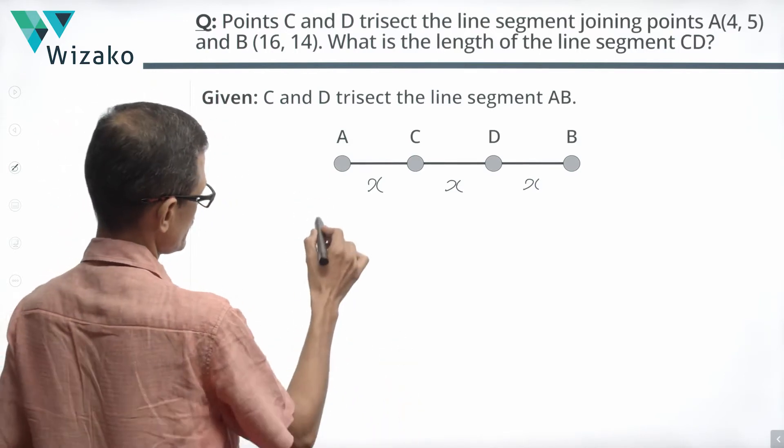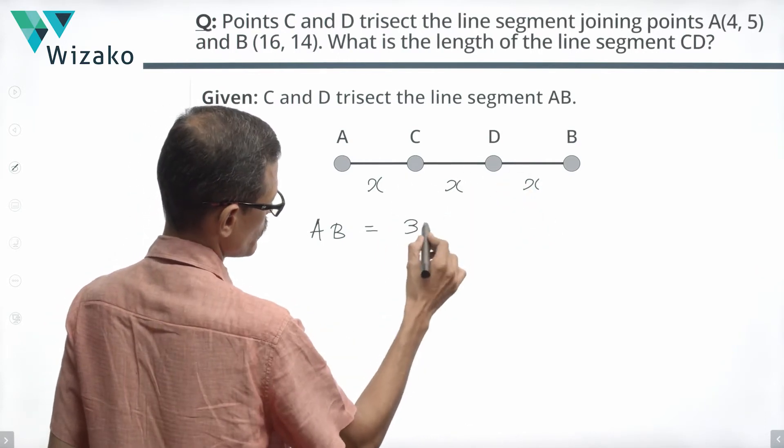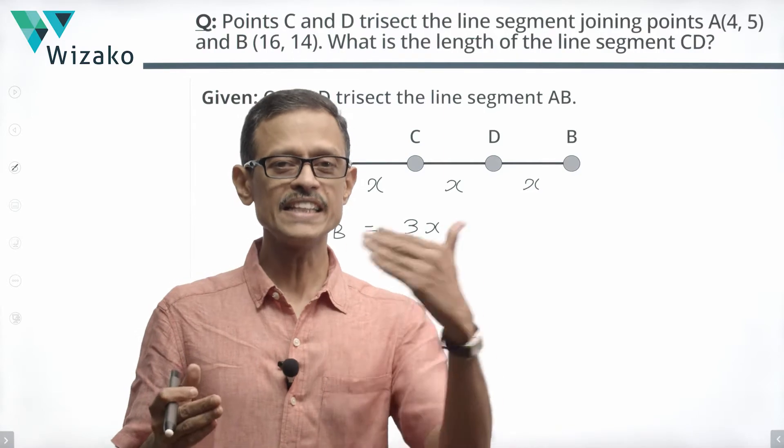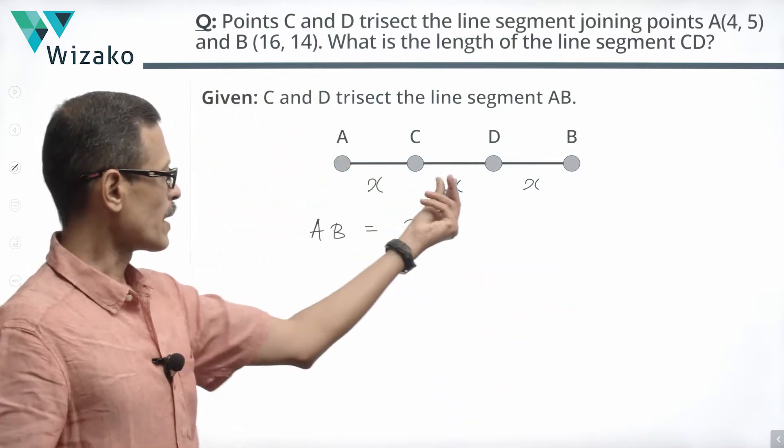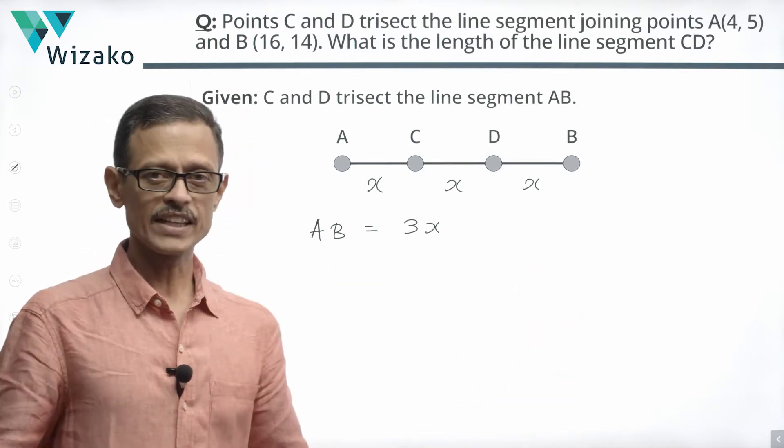This translates to the fact that the measure of line segment AB will be equal to X plus X plus X which is equal to 3X because when it is trisecting it divides into three equal parts. So part 1, part 2, part 3 all measure the same which means the entire line segment AB is going to measure 3X units.